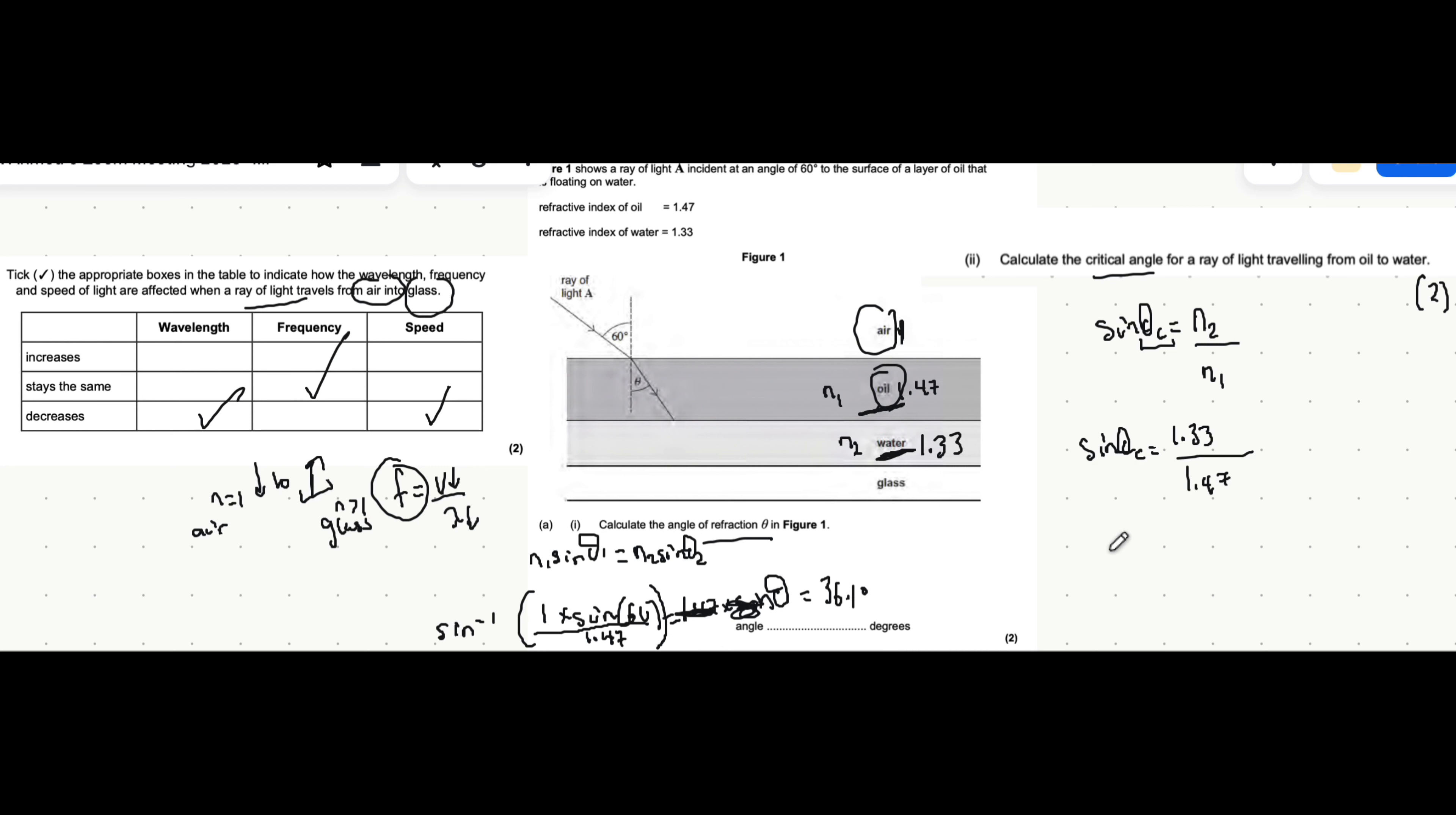From there, you do the inverse sine of both sides. So the critical angle is the inverse sine of everything that's here. Let's just write that out again so you're not confused. And that will give you the critical angle. I think what I'll do next is make a video about total internal reflection so we can have a look at why the critical angle is useful. And that gives 64.8 degrees.